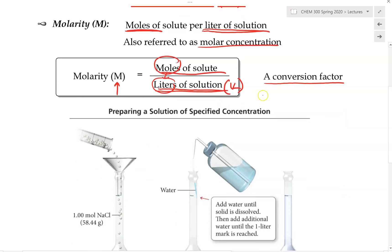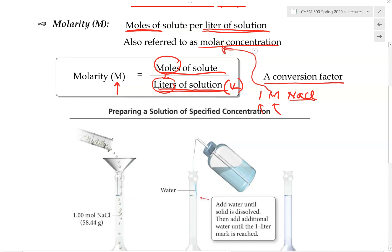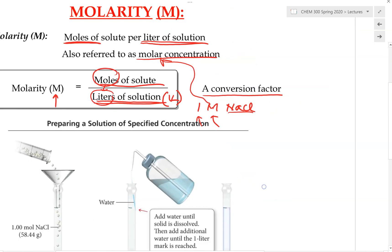For example, if we were to have a 1 M NaCl solution on the label of a bottle, the '1' is the concentration, the 'M' tells us that molarity is the method being used to describe concentration, and 'NaCl' is the solute. We don't normally say '1 M NaCl' — we say '1 molar NaCl.' As a conversion factor, this means 1 mole of NaCl over 1 liter of solution.